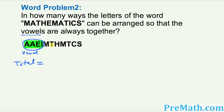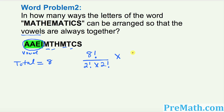So the vowel group counts as 1, then M is 2, T is 3, 4, 5, 6, 7, and 8. So we have 8 total groups. Now put down 8 factorial on the top divided by — ask yourself are there any letters repeating? M is repeating itself and T is repeating itself as well. So that means 2 factorial for M times 2 factorial for T, times the vowel group. The vowel group has 4 letters inside, so put down 4 factorial.